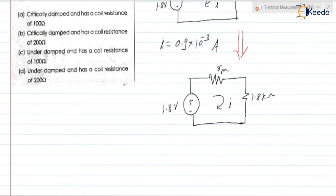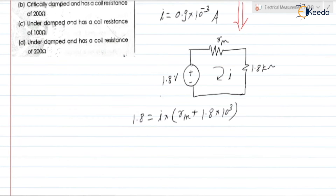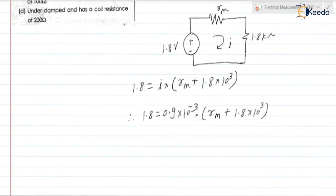Applying KVL: 1.8 = I × (RM + 1.8 × 10³). Substituting I = 0.9 × 10⁻³: 1.8 = 0.9 × 10⁻³ × (RM + 1.8 × 10³). Solving for RM: RM = 1.8 / (0.9 × 10⁻³) − 1800 = 200 ohm. So meter resistance is 200 ohm.